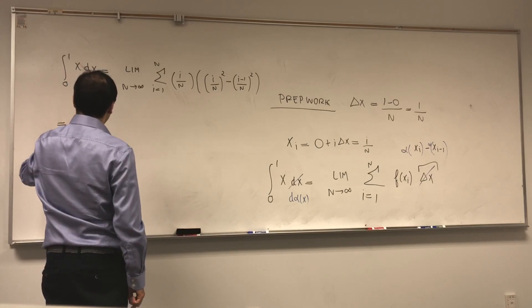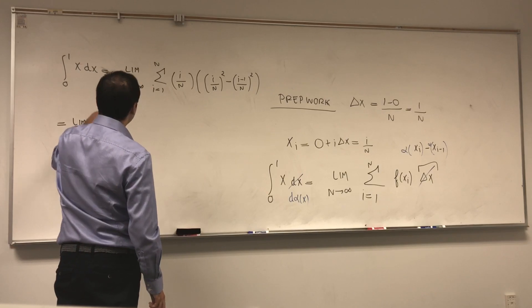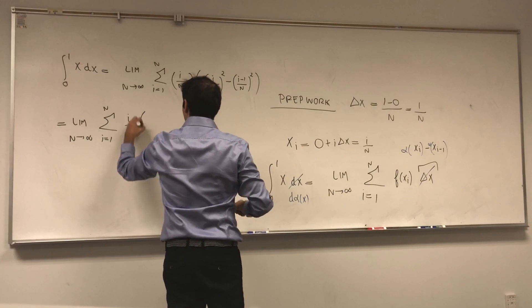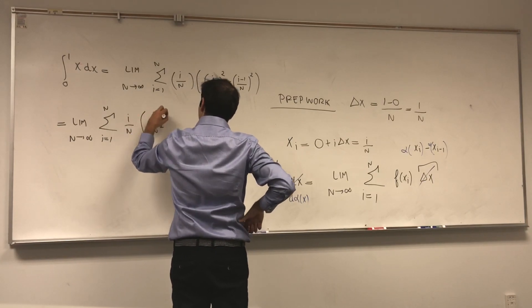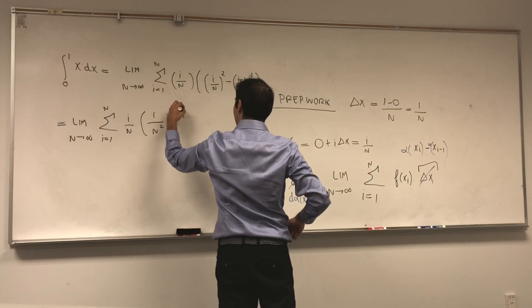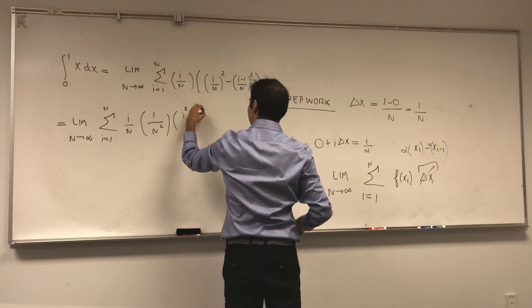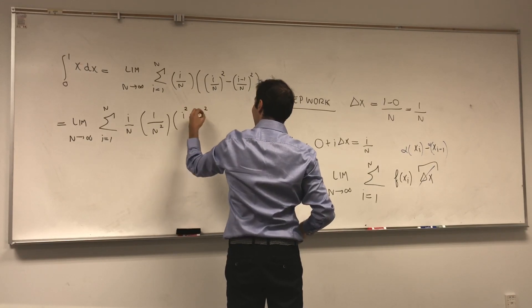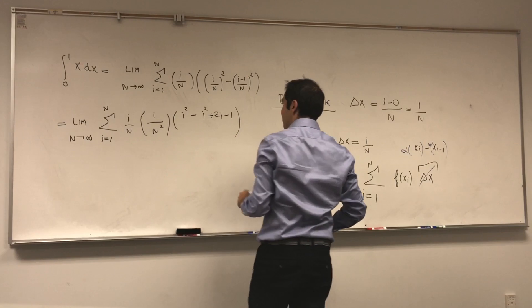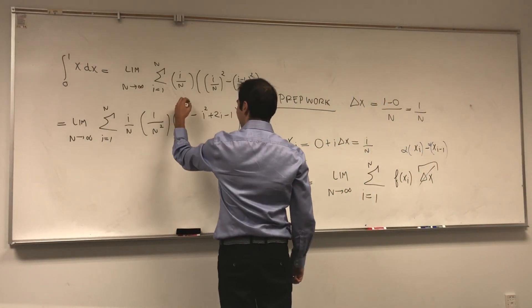Let's limit n goes to infinity, sum from 1 to n of i over n of, so we want to keep this 1 over n squared, it's pretty important, but the i squared we still have here, and then the (i-1) squared, let's expand it out. So i squared minus (i squared minus 2i plus 1). And notice you do have a simplification here.